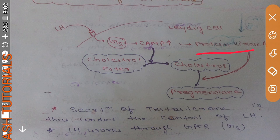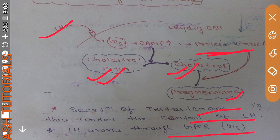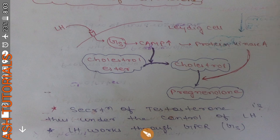cAMP leads to activation of protein kinase A (PKA). cAMP and PKA convert cholesterol esters into free cholesterol, which is needed for testosterone synthesis. This free cholesterol is then converted into pregnenolone by 20,22-desmolase, which is stimulated by PKA. This is the basic mechanism of regulation of testosterone synthesis by LH, working through the G-stimulatory GPCR pathway.